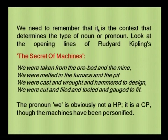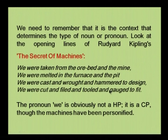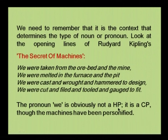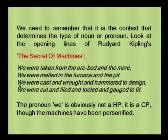We need to remember that it is the context that determines the type of noun or pronoun. Look at the opening lines of Rudyard Kipling's The Secret of Machines: 'We were taken from the ore bed and the mine, we were melted in the furnace and the pit, we were cast and wrought and hammered to design, we were cut and filed and tooled and gauged to fit.' Here, the pronoun 'we' is obviously not a human pronoun. In this poem it is the machine doing the talking, so all four instances of 'we' stand for a culture pronoun, though the machines have been personified.